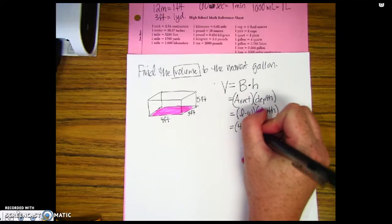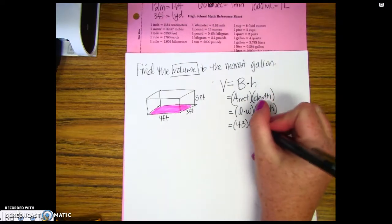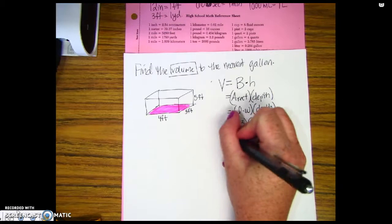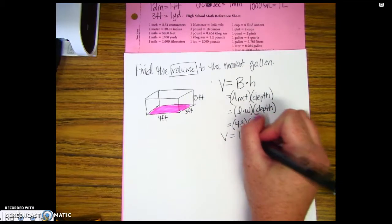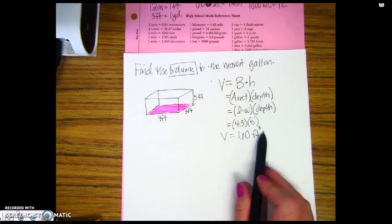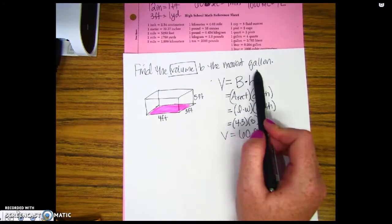So this is gonna look like four times three times five when I'm doing this. So four times three times five, plugging that in my calculator. My volume is equal to 60 cubic feet or 60 feet cubed. Now the problem is that I have to convert this to gallons.